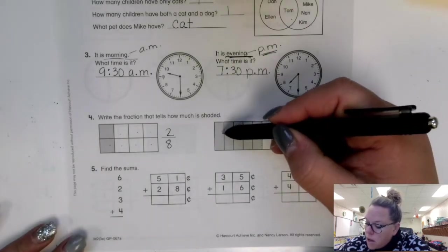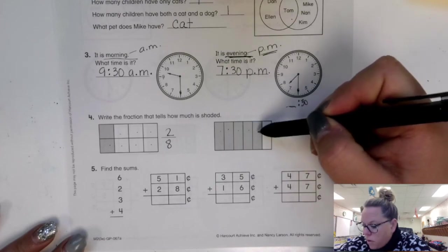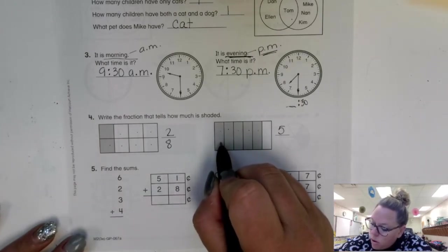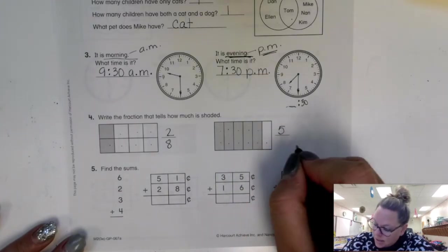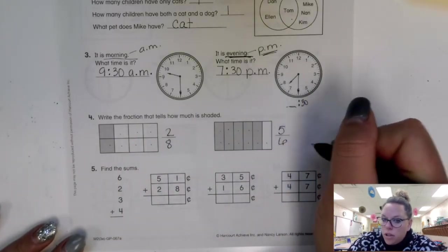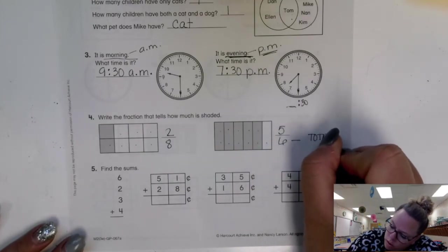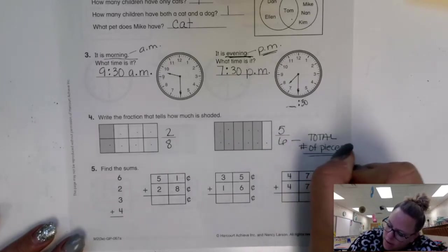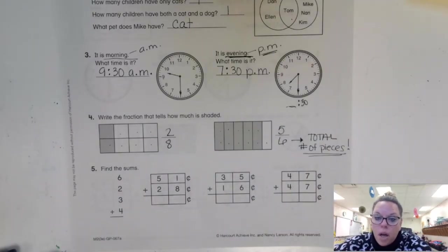Look at the next one. How many are shaded? One, two, three, four, five. I have five pieces shaded out of how many total? One, two, three, four, five, six. So six is my bottom number. It's not five over one because there's only one shaded, one not shaded. Nope. Your bottom number is always your total number of pieces. Always. Your bottom number, your denominator is always your total number of pieces.